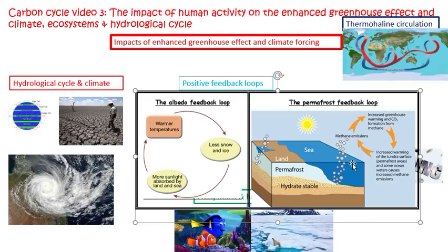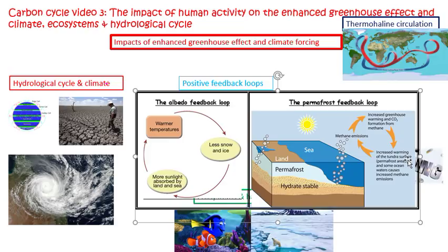The other feedback loop is permafrost thaw. Permafrost is permanently frozen ground or soil, and in it is trapped methane, which is a greenhouse gas. If you just follow this round again in a cycle: we get global warming, that then causes the tundra or the permafrost to thaw, and when it thaws it releases the methane, which goes into the atmosphere and traps more heat and causes enhanced global warming, which causes more permafrost to thaw, more methane to be released, and it's a vicious cycle.